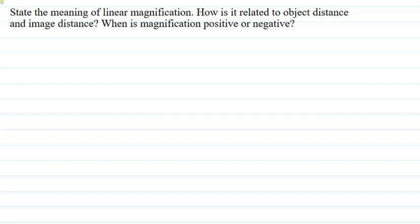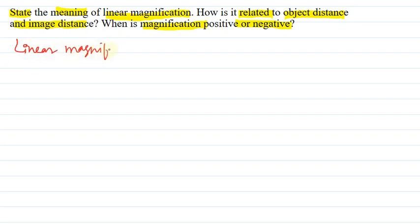Hello everyone, hope you are doing well. I am going to explain this question in this video. The question says: state the meaning of linear magnification, how is it related to object distance and image distance, and when is magnification positive or negative? We need to explain all this. Let us see the answer.